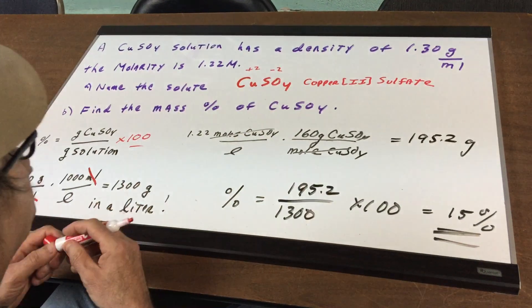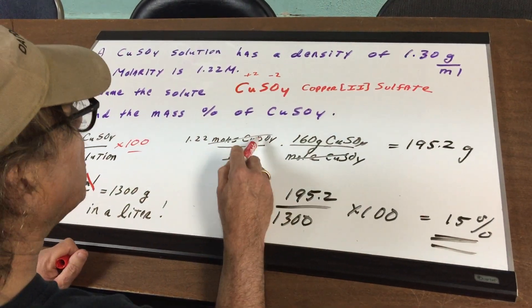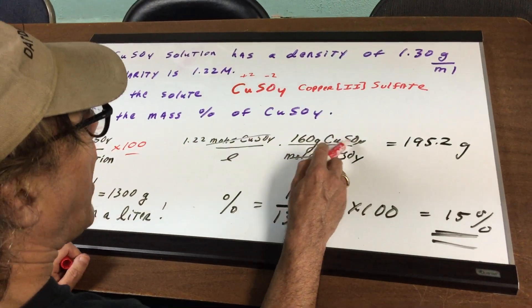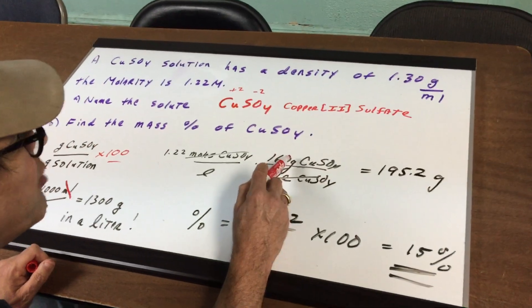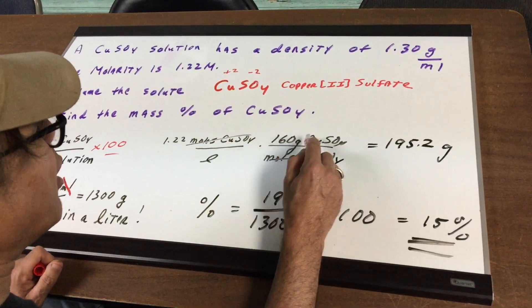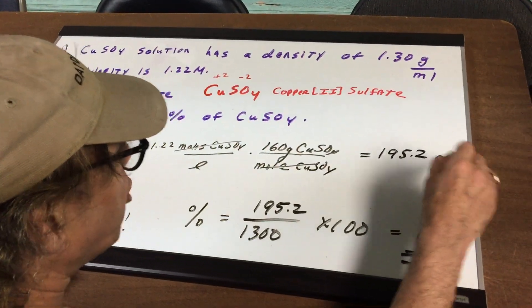What is 1.22 molar mean? It means there's 1.22 moles of the copper two sulfate per liter. You look up the weight of copper two sulfate—it's 160 grams in a mole. Moles cancel out and you're now left with the grams of the copper sulfate in a liter of solution.